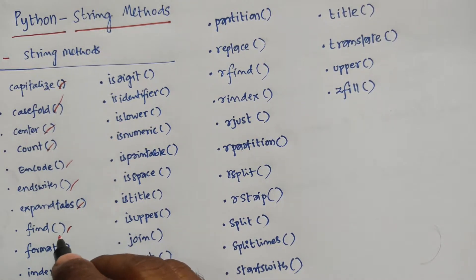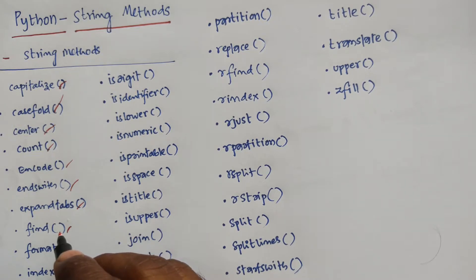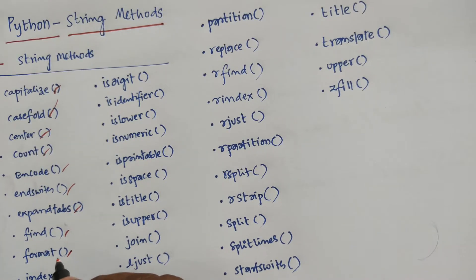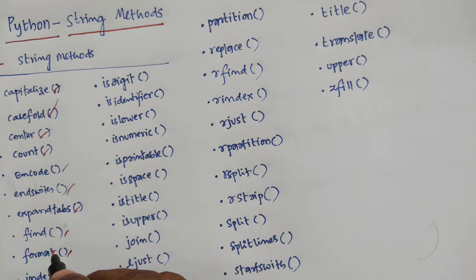Next one is find, which searches the string for a specified value and returns the position where it was found. Next is format, which formats specified values in a string. Generally, you cannot add strings and numbers in a single line, but with the help of format, you can add numbers into a string.